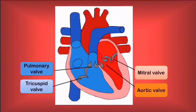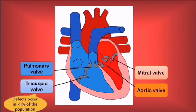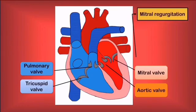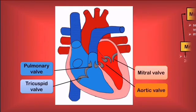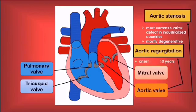Finally, a few notes on each cardiac valve regarding their possible defects. Defects of the pulmonary valve are rare outside of congenital conditions — for example, tetralogy of Fallot, as mentioned previously. Defects of the tricuspid valve occur in less than one percent of the population and are rarely isolated; a tricuspid stenosis is more likely to be identified alongside a mitral stenosis rather than in isolation. For the mitral valve, mitral regurgitation is the second most common valve defect and is more common in women, while mitral stenosis has a symptom onset at 20 to 30 years. For the aortic valve, stenosis is the most common valve defect in industrialized countries and is mostly degenerative in nature, while regurgitation has an onset at 40 to 60 years.